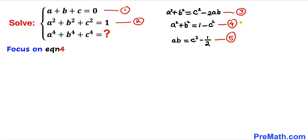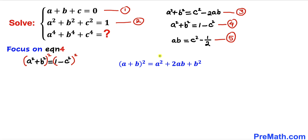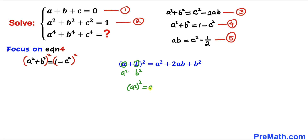Now let's focus on equation four. I have copied it down and I'm going to take a square on both sides. Recalling the identity a plus b whole squared equals a squared plus 2ab plus b squared, I apply it to the left side replacing a by a squared and b by b squared. Using the property that a squared whole squared equals a to the power four, the left hand side becomes a to the power four plus 2a squared b squared plus b to the power four.